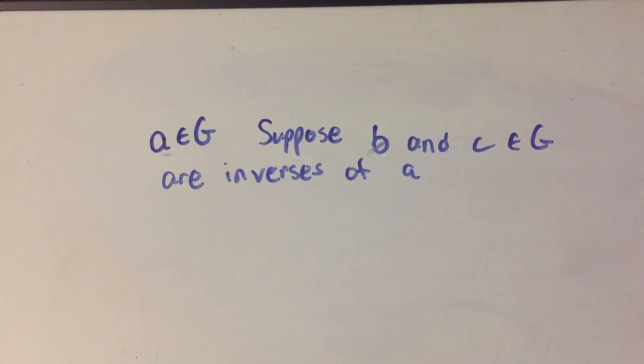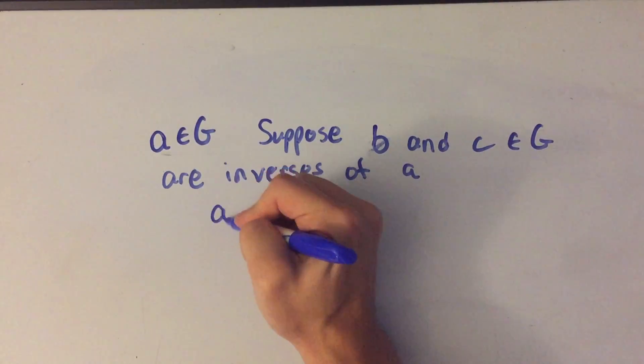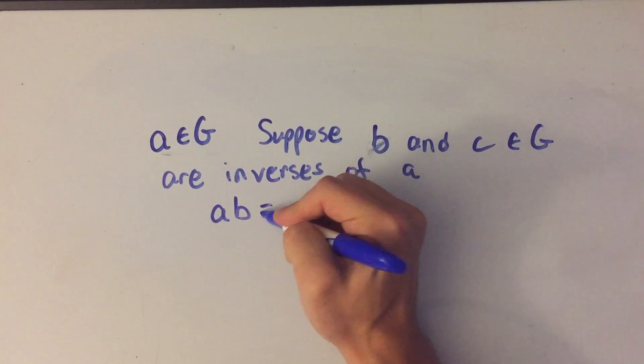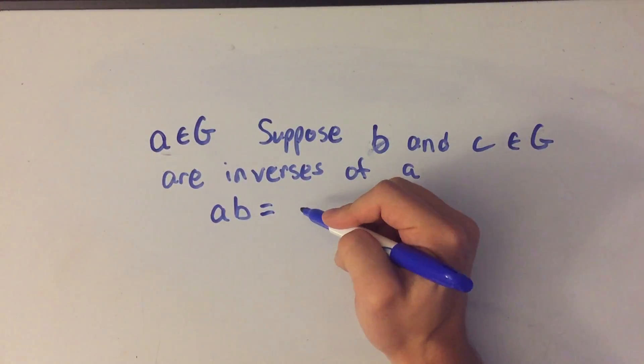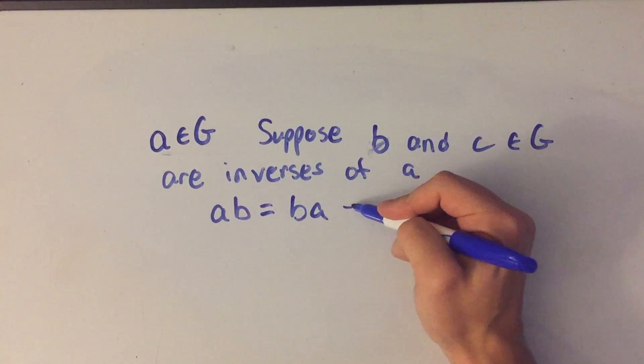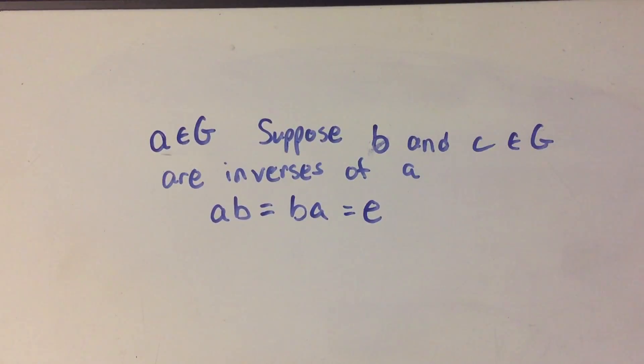Now remember what it means to be an inverse. Something is an inverse if you times it by the element, whichever way, either from the left side or the right side, you get the identity. So B is an inverse of A if A times B or B times A is the identity element.